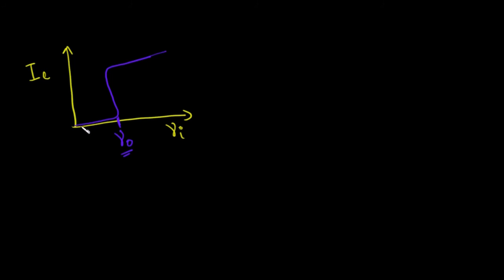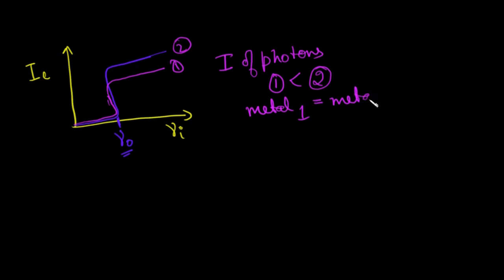If I say for a different experiment, the graph was, let's say, something like this. And this is experiment one, this is experiment two. I can say in experiment one, intensity of photons in one was less than that in two.